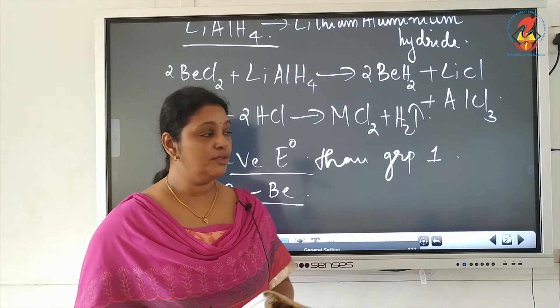Beryllium is the first element of group 2 and shows anomalous behavior. First, beryllium has an exceptionally small atomic and ionic size; because of high ionization enthalpy and small size, it forms largely covalent compounds that get easily hydrolyzed. Second, beryllium does not exhibit a coordination number more than 4 in its valence shell, as there are only 4 orbitals available. The remaining members can have a coordination number of 6 by using d orbitals.